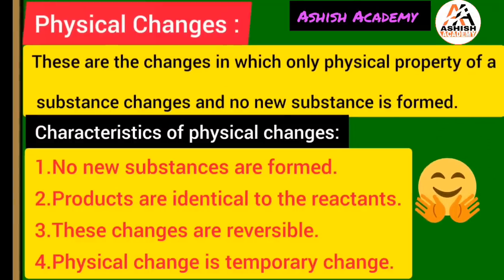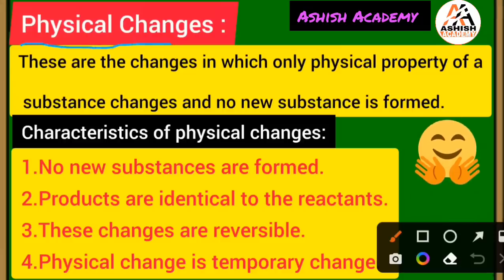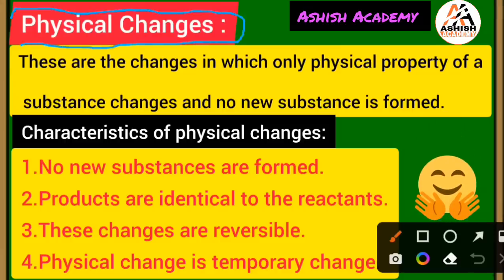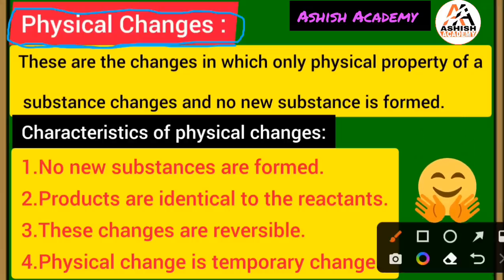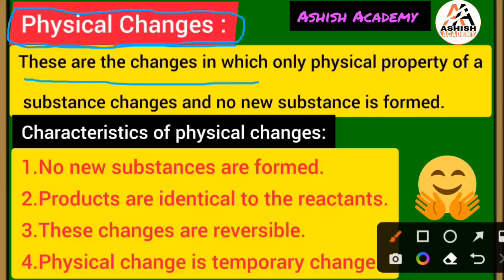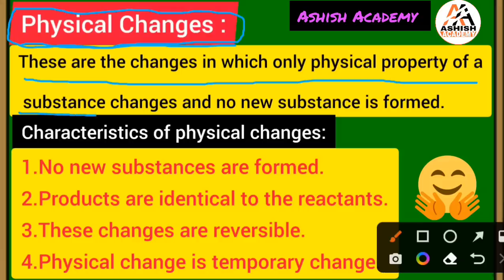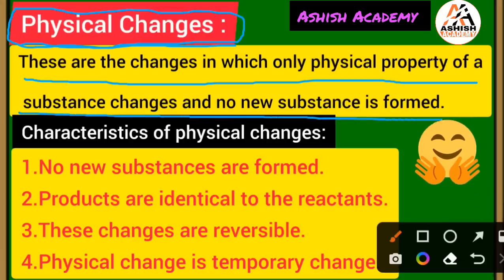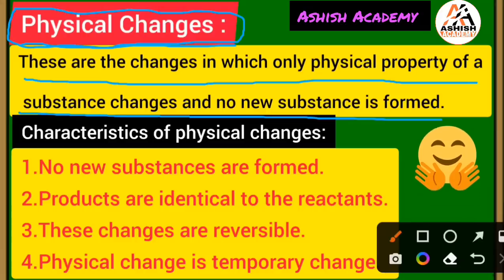Physical change. What does physical change mean? Substances can undergo two types of changes: physical change and chemical change. Physical change means these are the changes in which only the physical property of a substance changes and no new substance is formed.